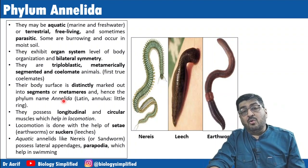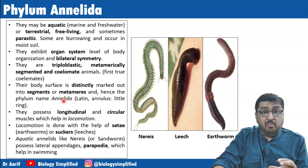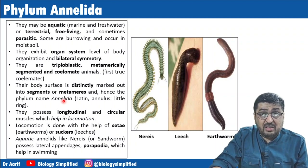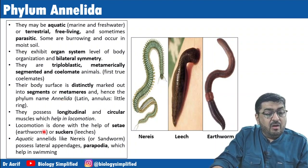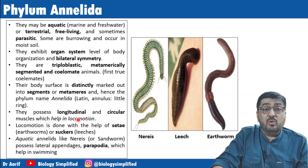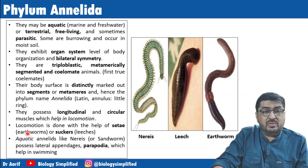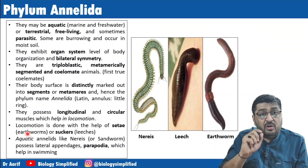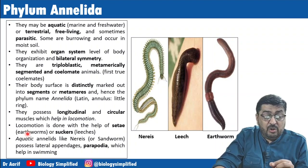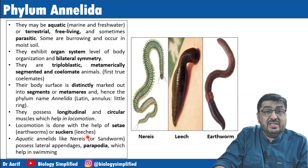When we study earthworm, we learn that the number of segments is almost 100 to 120, and how the body is divided into different parts according to these segments. The Annelids possess longitudinal and circular muscles which help in locomotion. Locomotion is aided by setae in the case of earthworms — a typical S-shaped structure in their body wall. Leeches move with the help of suckers.